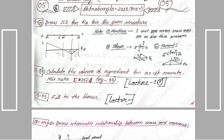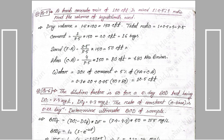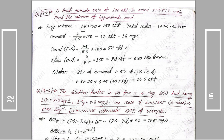We calculate the volume of ingredients for 100 CFT concrete, mix ratio 1:2.5:4. The concrete volume is 100 CFT, so we have a wet volume of ingredients. The dry volume of ingredients equals 1.525, so the dry volume is 1.525 × 100 = 150 CFT. The total ratio is 1 + 2.5 + 4 = 7.5.